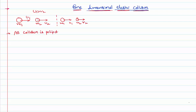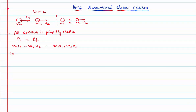Since the collision is perfectly elastic, both momentum and kinetic energy are conserved. Momentum conserved means p-initial equals p-final. The momentum of the system before the collision is the sum of both bodies' momenta — they are added because both bodies move in the same direction. So we write: m1·u1 + m2·u2 = m1·v1 + m2·v2, where u1 and u2 are initial velocities and v1, v2 are final velocities. Rearranging: m1(u1 − v1) = m2(v2 − u2). Call this equation number one.